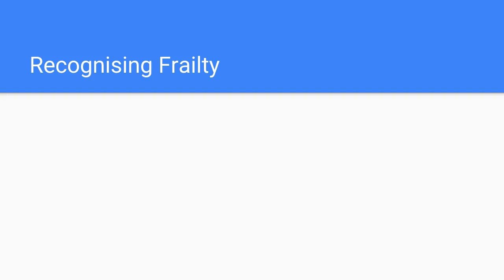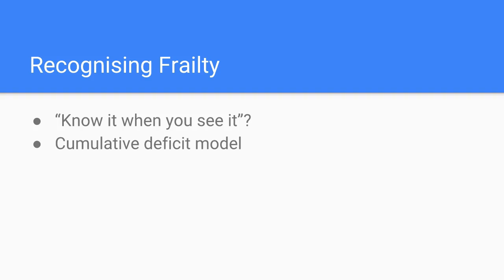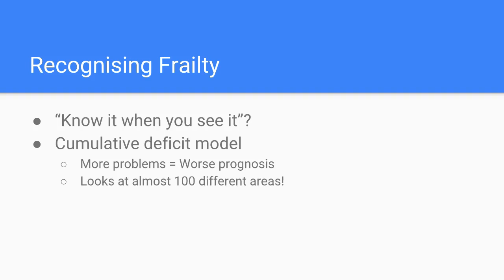How do we recognise people who are frail? There's a school of thought that says simply that geriatricians know it when they see it. This is something I kind of agree with, but it's certainly not helpful to many non-geriatric specialists. So what is it that we're actually seeing? People have looked into it in different ways, and one rather nice basic idea is that of the cumulative deficits model. That basically says that the more problems you have, the worse your long-term prognosis is. Not clever or complicated, and frankly pretty obvious. But the problem is this model looks at almost 100 different areas — nobody can do that in real life, and it's certainly not something that can be done at the front door.